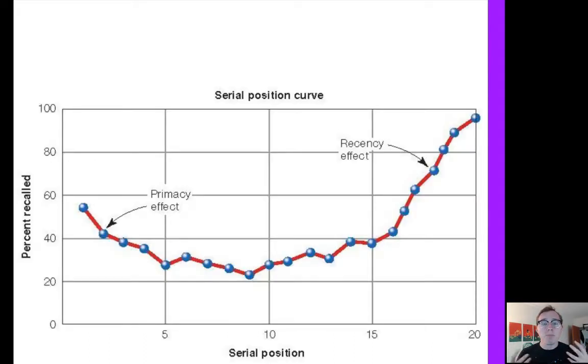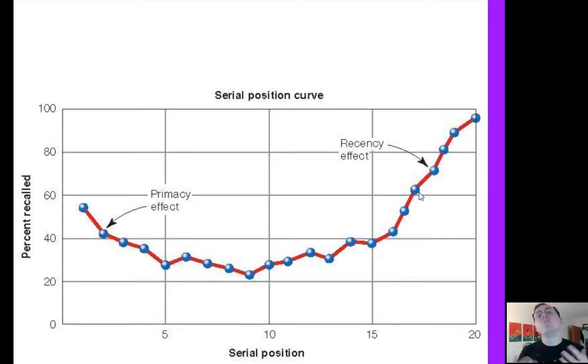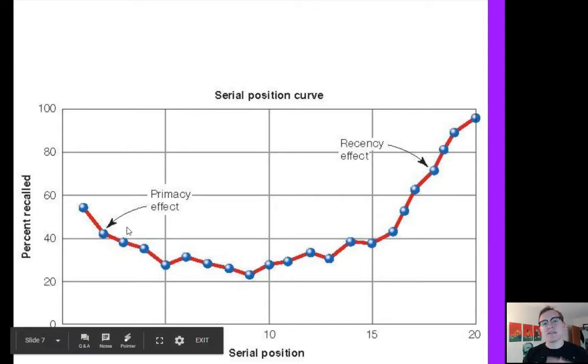Now, what he found was the serial position curve. And what this demonstrated is that the serial position, so the position that the item was on the list, influenced the salience of those items. Basically, the percent of words recalled at the beginning of the list were much higher than those words in the middle. And those words that were at the end of the list were even more of them were remembered. Now, this basically goes in line with the idea that you remember things that happened more recently, but how do we explain this first part of the curve, this idea of a primacy effect?